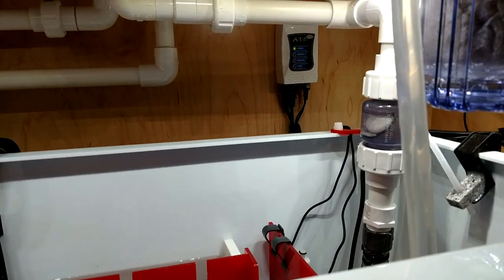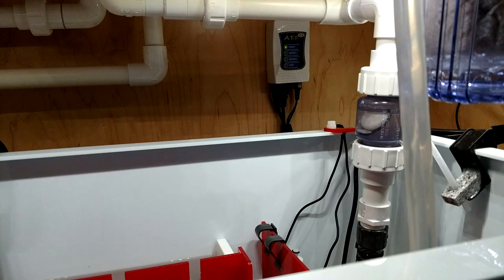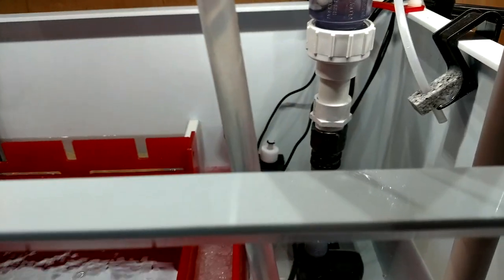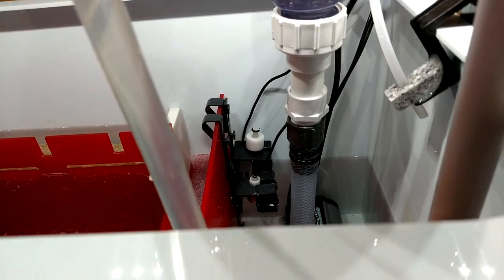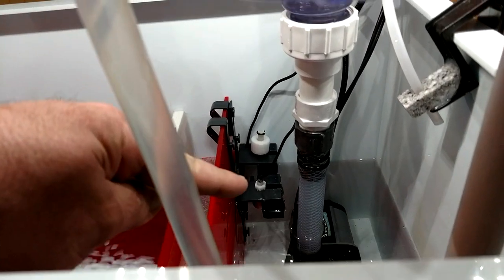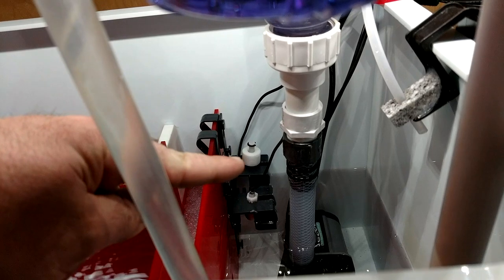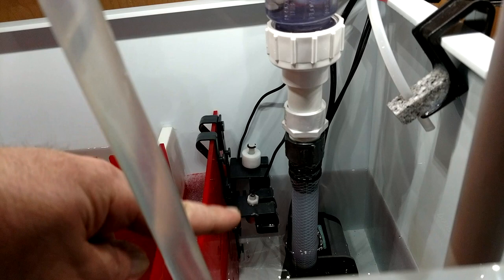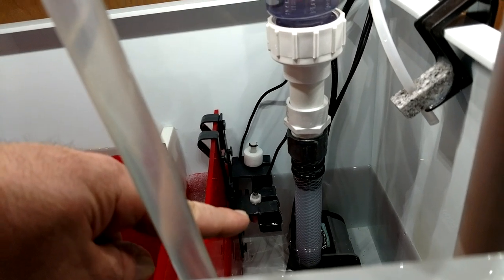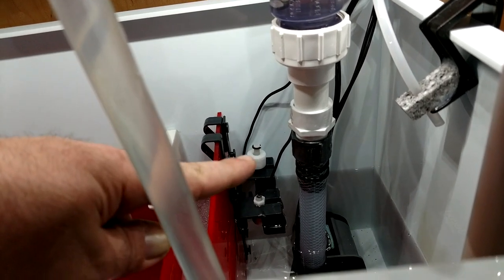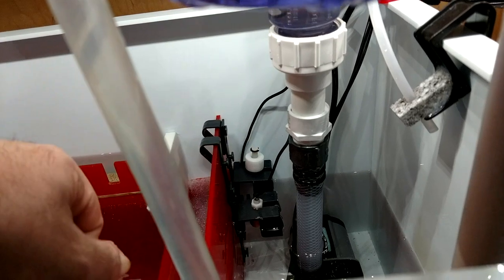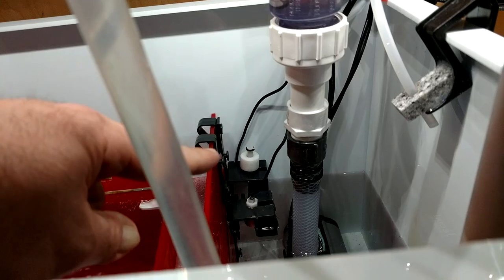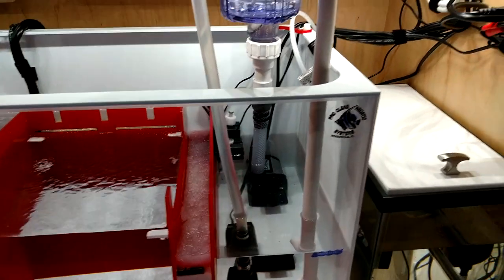We'll come over here. You can see in the back there, that is the JBJ Auto Top Off. Now I do run mine in the A mode where you take the standard float and then you flip this one upside down. When the water level drops it turns on. For some reason if this one goes bad and the water starts really filling up, once this pumps up then it shuts the pump off. It's a secondary emergency backup. I think they're super important, so you've got to have that.